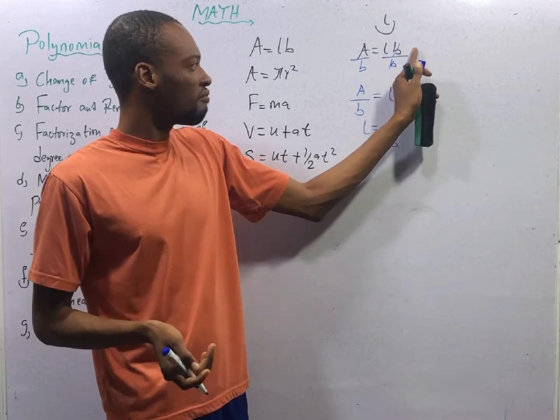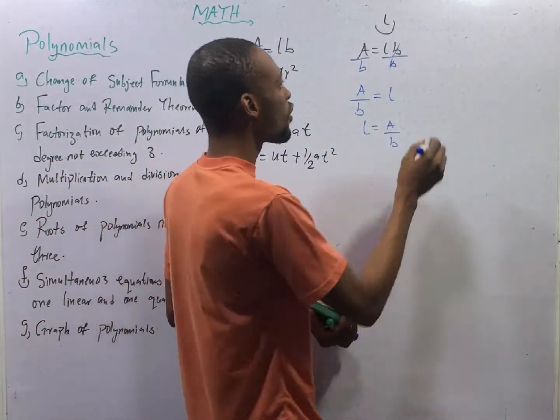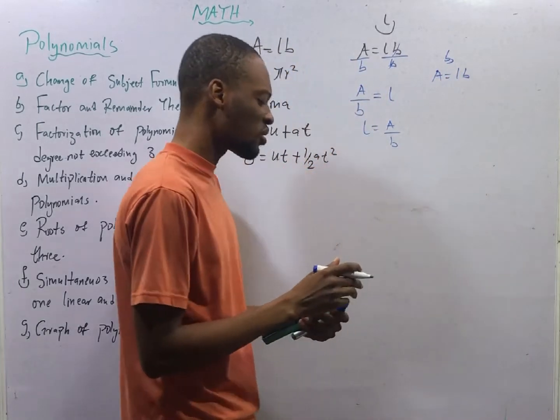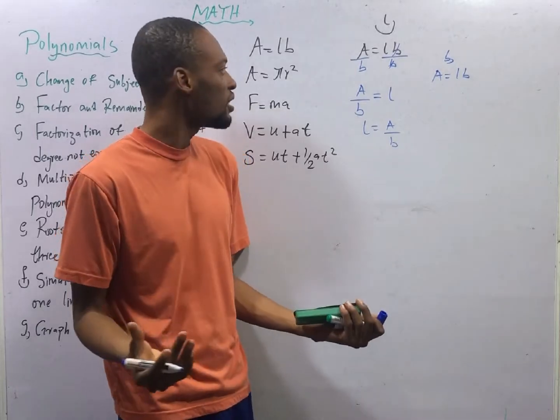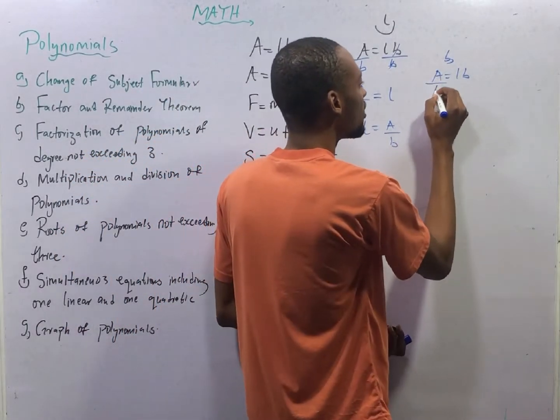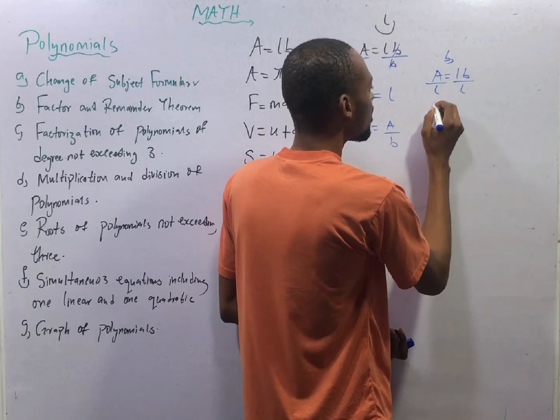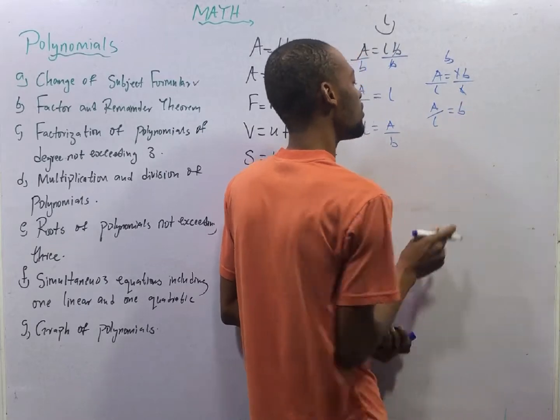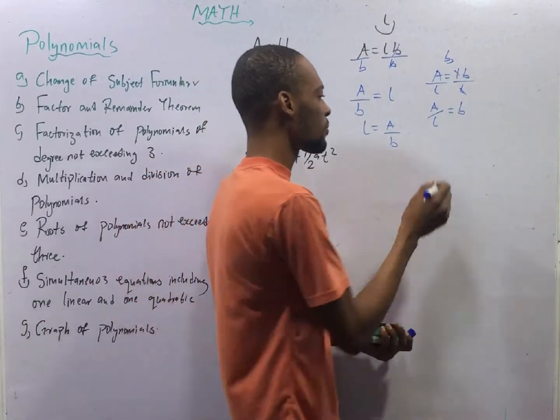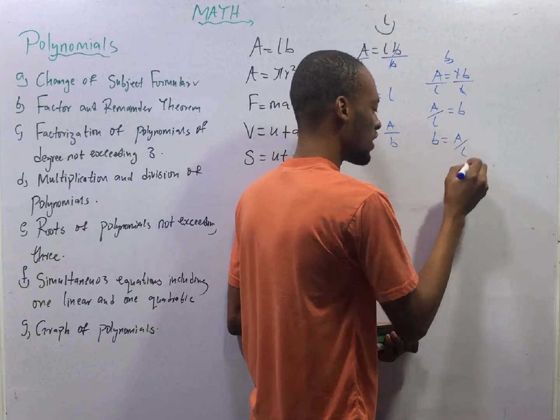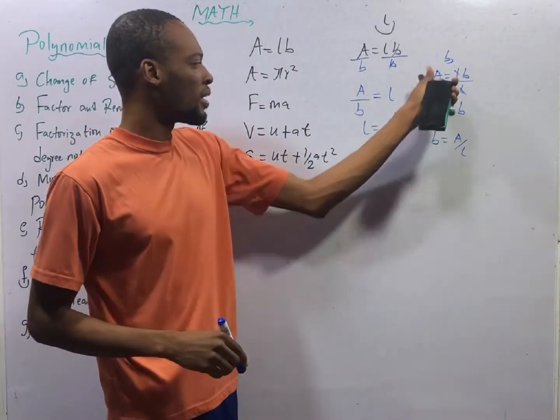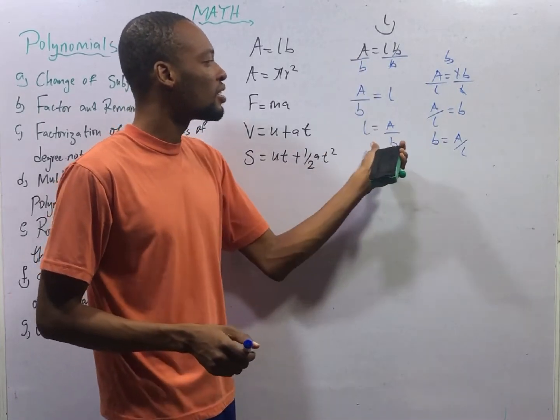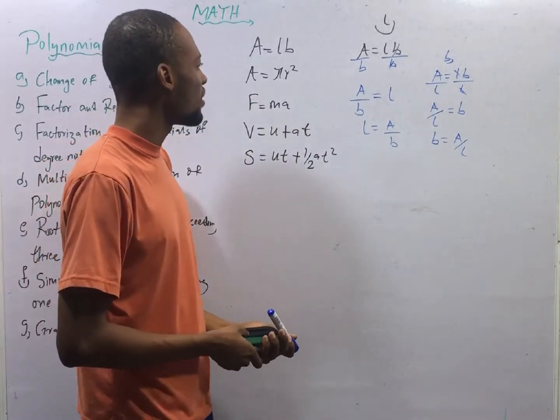If we are making B subject formula from A equals LB, multiplication is what is separating them. We simply divide both sides by L so that A over L equals L divided by L is 1, B remains. Similarly, B equals A over L. We've changed the subject formula from A to B. And here, we've changed the subject formula from A to L.